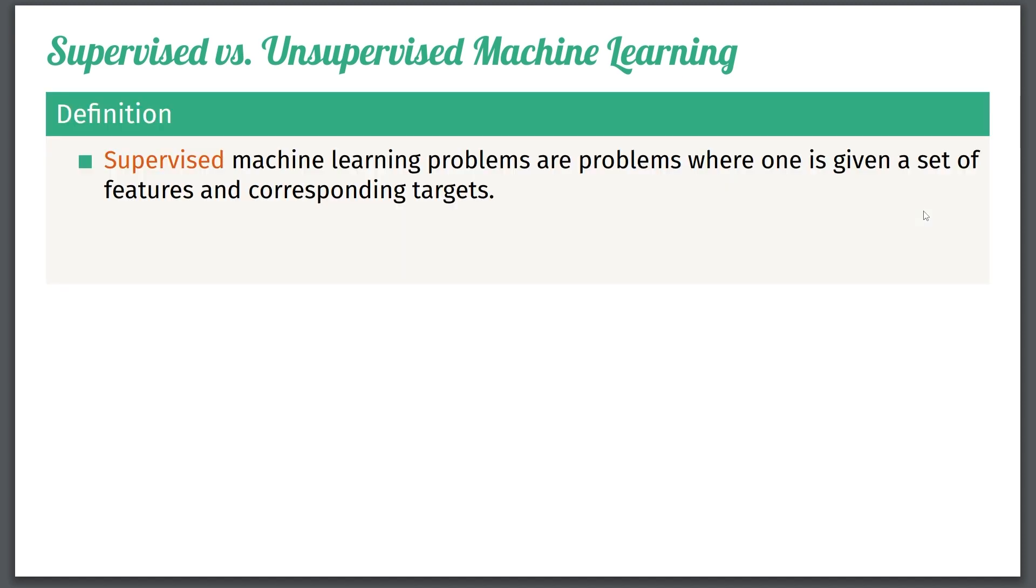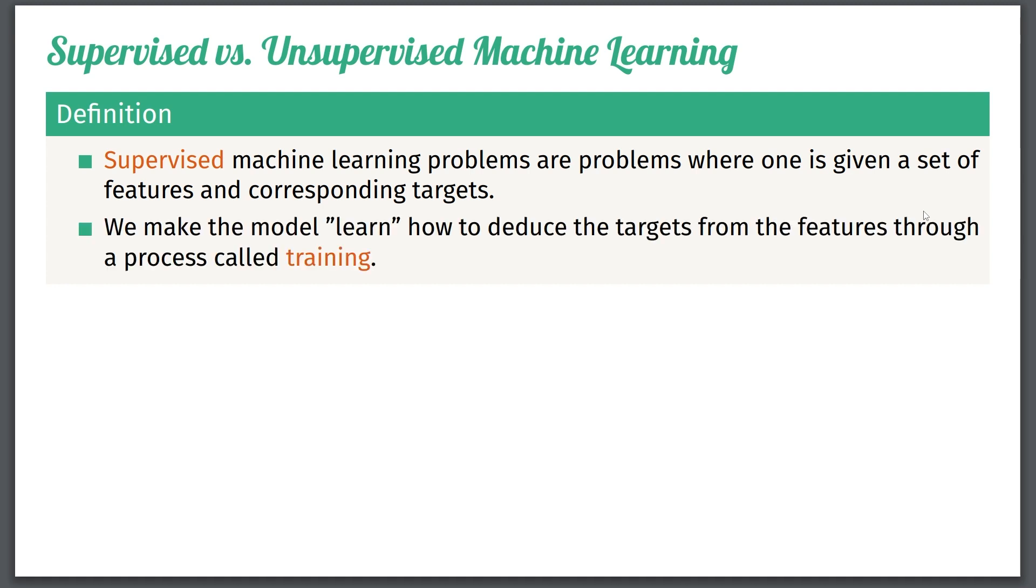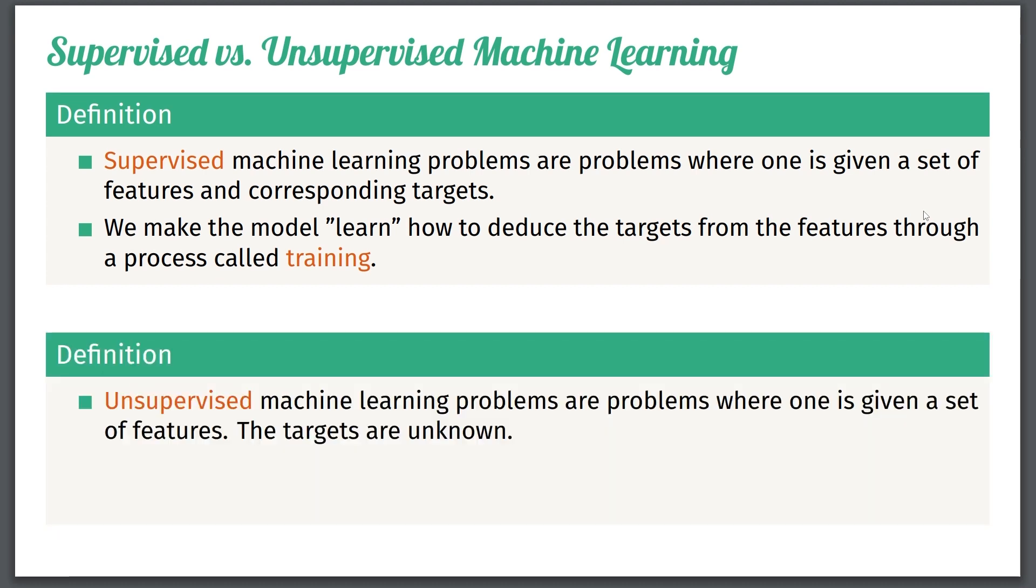A more important distinction comes with supervised versus unsupervised machine learning. So let me just give you the definitions, and then we can talk about it. So supervised machine learning is a set of problems, where one is given a set of features, and the corresponding targets, and the machine learning algorithms you use should learn from this to better predict these targets. As I said, we make the models learn how to deduce the targets from the features through a process called training. And you might be like, isn't this just machine learning, what you really described in the last lecture? And yeah, kind of, but this is the most important branch, or at least the biggest branch of machine learning, but one also has unsupervised machine learning.